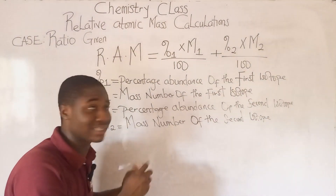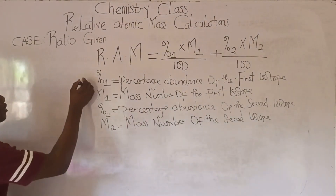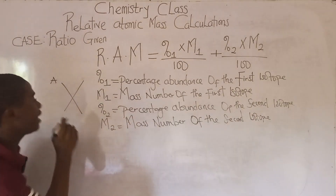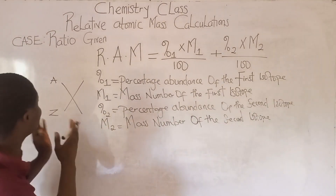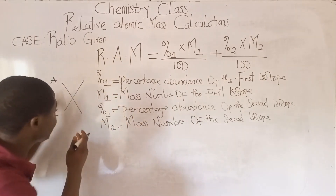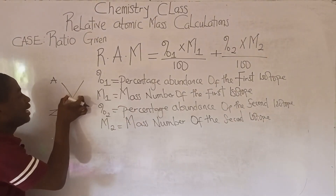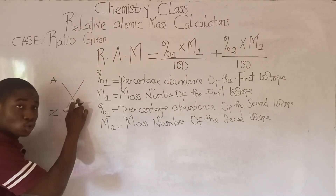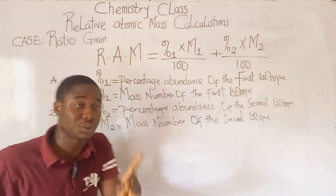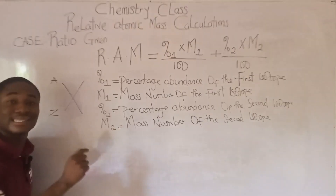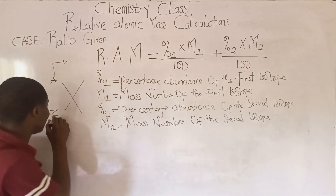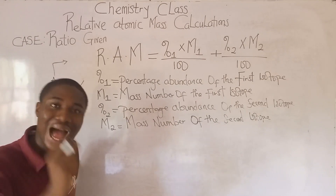Before we take the example, I need to explain a very important concept. Let's assume this is an atom X, labeled A at the top and Z at the bottom — this is how questions will actually appear. For any element in chemistry, the top position is always labeled A and the bottom is labeled Z.